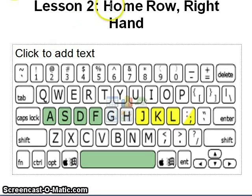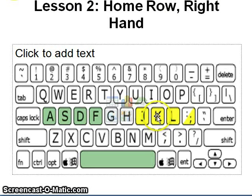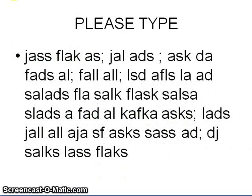Lesson number 2 is still on the home row using your right hand. Letter J, use your right index finger. Letter K, the right middle finger. Letter L, the right ring finger. And semicolon, the right little finger. Here is the activity for lesson number 2.